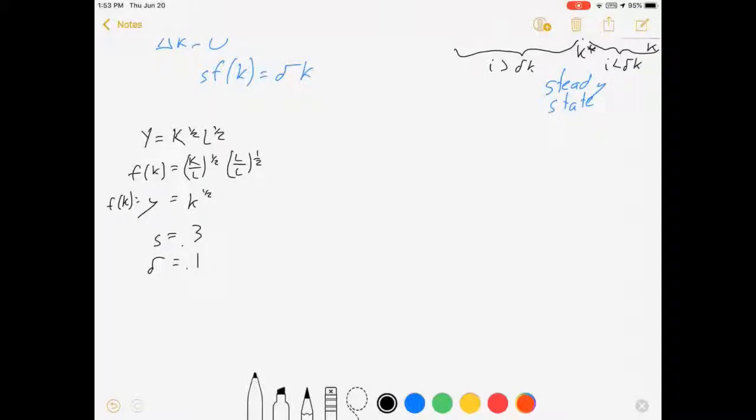And so based on all that I can solve for my steady state level of capital by setting the change in capital equal to zero, which means s f of k equals delta k. Well f of k equals y, so s k to the one-half equals delta k. Which means 0.3 times the square root of k equals 0.1 times k. So three equals square root of k and the steady state level of capital equals nine.